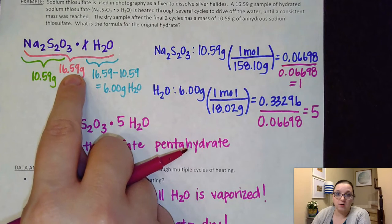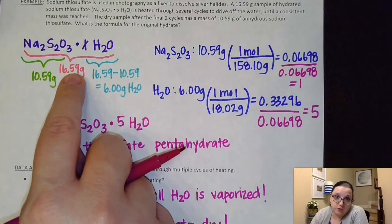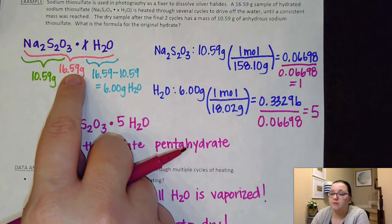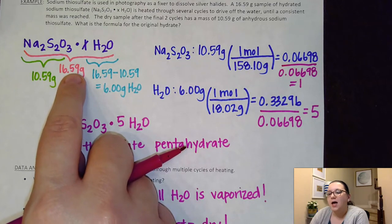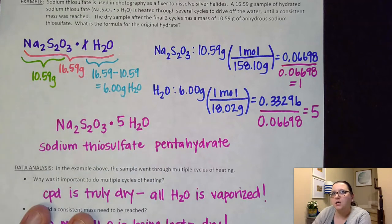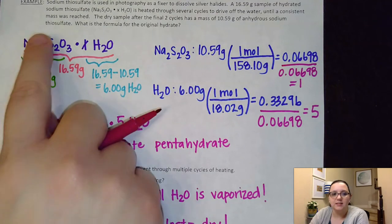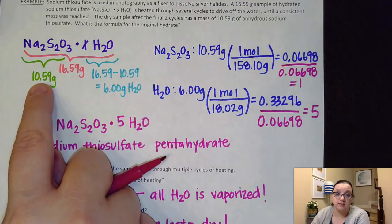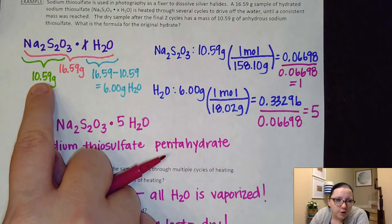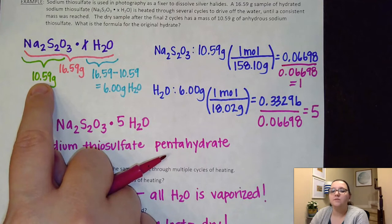We would have had this number to start off with regardless of if we dried it out or not. So that 16.59 would not have changed. However, if I didn't get rid of all of the waters, what that would mean is this anhydrous mass would be too big because it would have still had some waters in there as well.